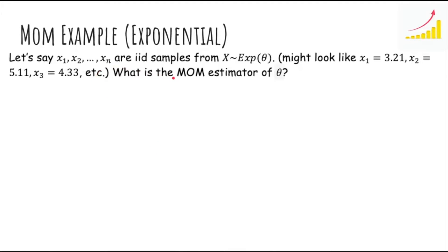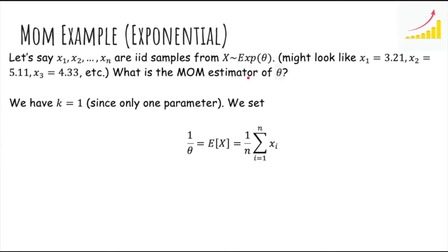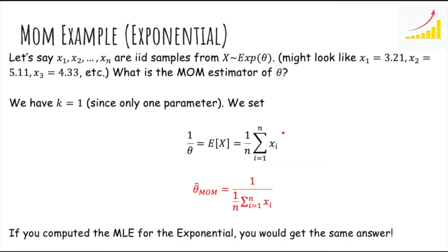What if x1 through xn are samples from an exponential distribution with parameter theta? In that case, we again only have one unknown parameter, and we want to set the first true moment E of x equal to the first sample moment. The expected value of an exponential is just 1 over theta, and we set that equal to the sample mean. Solving for theta, we get theta hat equals 1 over the sample mean. This is the same as the maximum likelihood estimate.